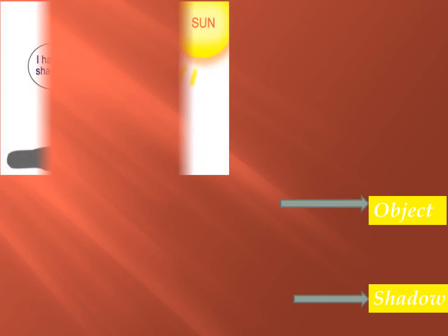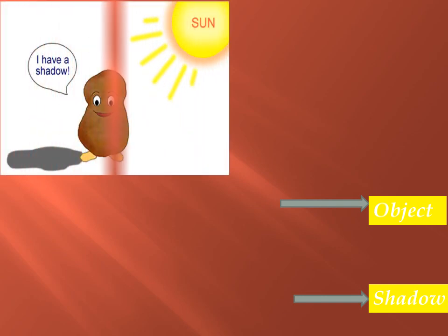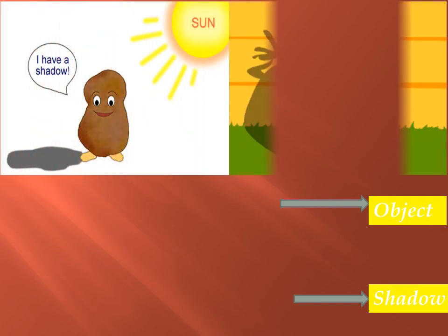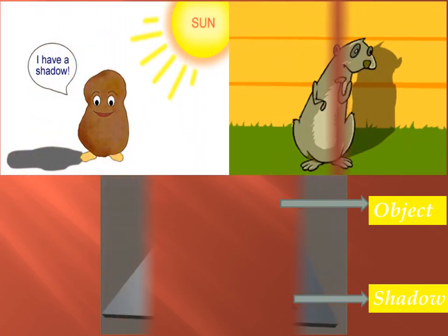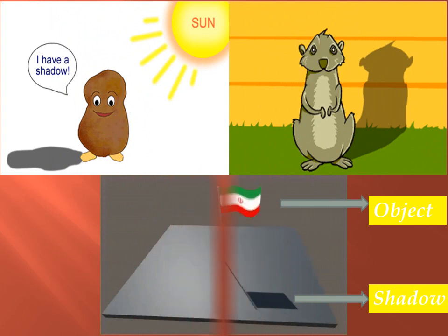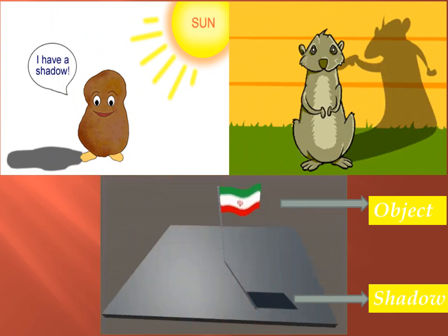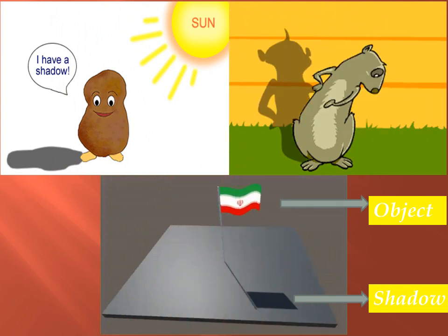A shadow can form on the ground, a wall, or on any other object. A shadow is always formed on the opposite side of the source of light.